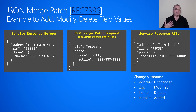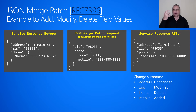Let's say that I, on the client, want to go and update this resource. I would do a PATCH operation from the client to the service, and in the body of the patch, I make this a JSON Merge Patch document, which looks just like JSON. I'm saying here that I want the zip to be 98033, so the zip will change from 98052 to 98033. After I apply this JSON Merge Patch, you can see the zip has changed.